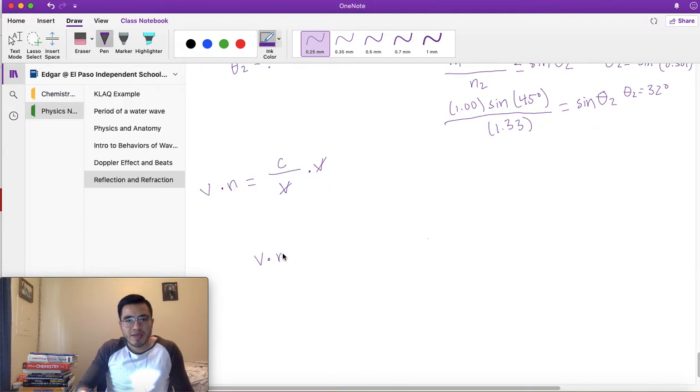So v times n is equal to speed of light. Now we want v by itself, we divide by n. Let's redo this line. These two cancel and you have: velocity is equal to speed of light divided by index of refraction.